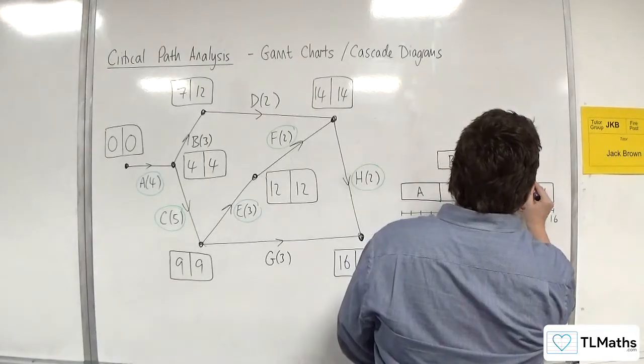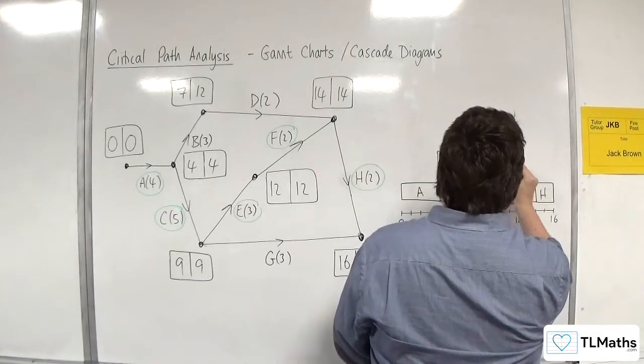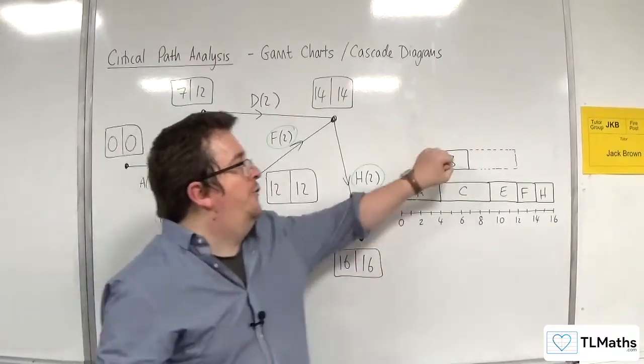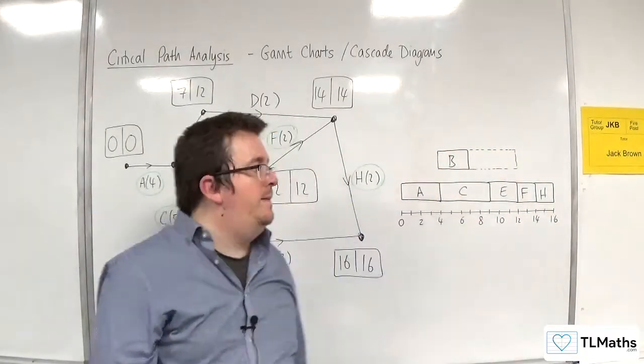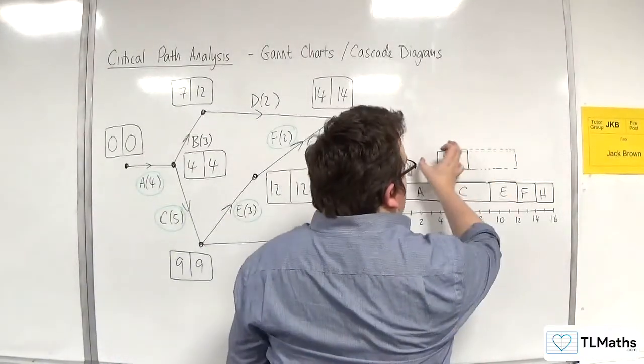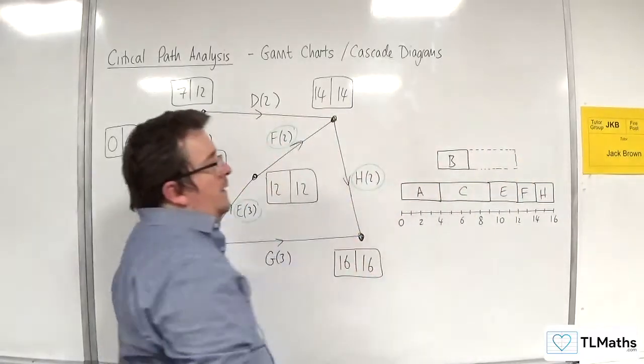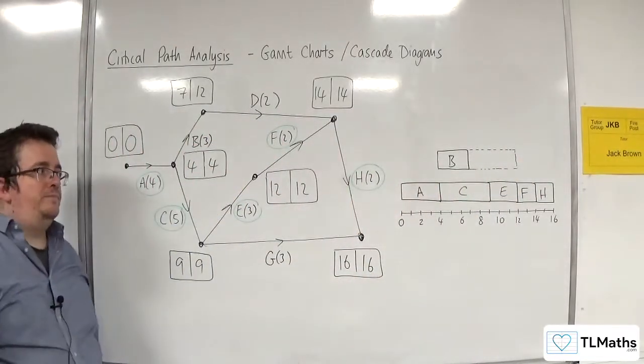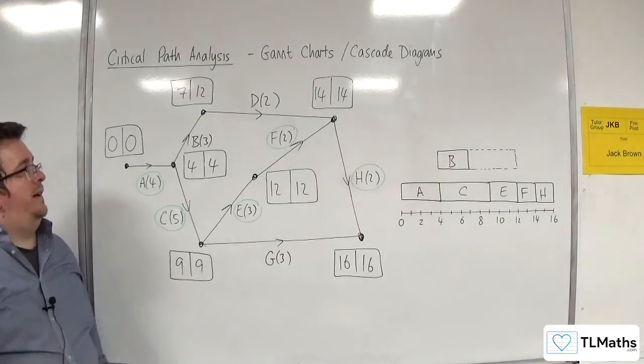So how do we represent that on this? What we do is draw a dashed box that essentially B can float within. So you can kind of move B right and left inside that box. So that's B done.